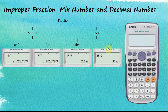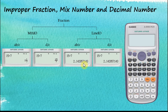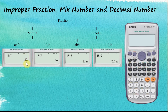If we tap the SD button again, decimal numbers change back to fractions and fractions back to decimal numbers. To convert a mixed number to an improper fraction, or an improper fraction to a mixed number, we use Shift+SD. When we tap Shift+SD, mixed numbers are converted to improper fractions and improper fractions are converted to mixed numbers. Note that even a decimal number will be converted to an improper fraction when we tap Shift+SD.